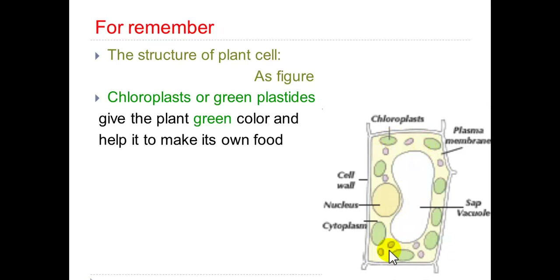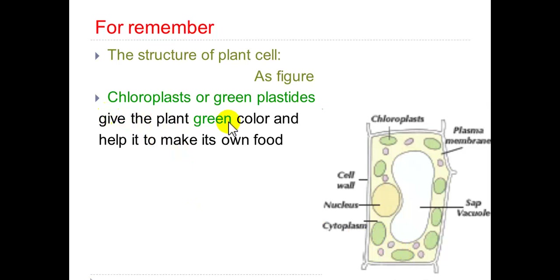Especially, I want to talk about chloroplasts, or green plastids. Chloroplasts give the plant its green color and help it to make its own food.